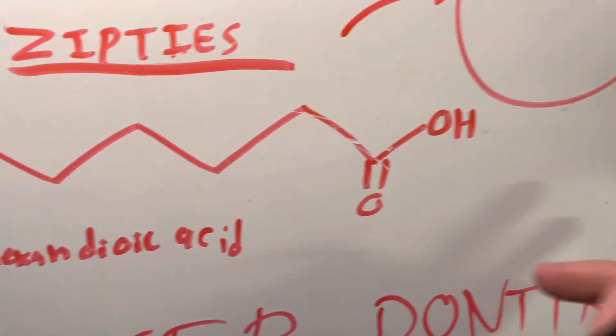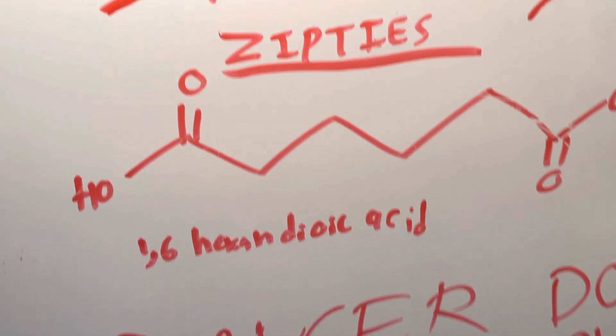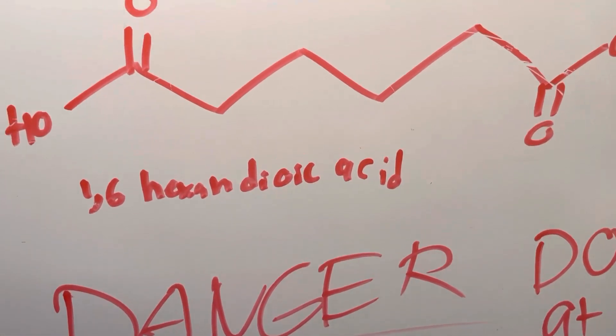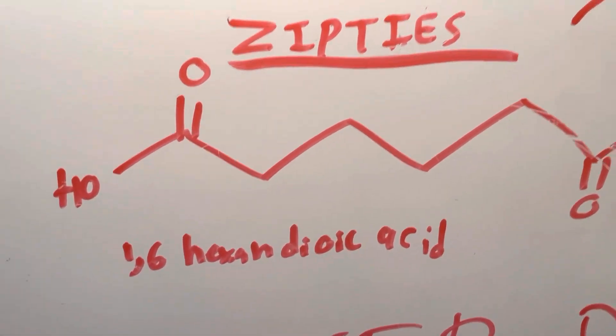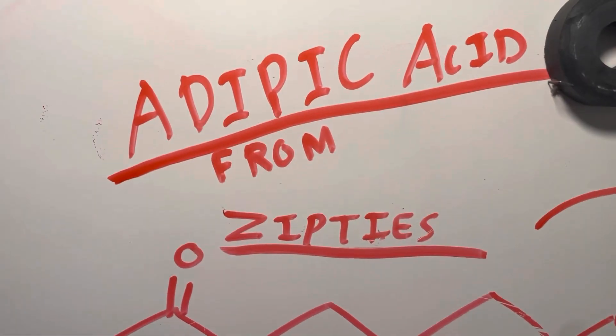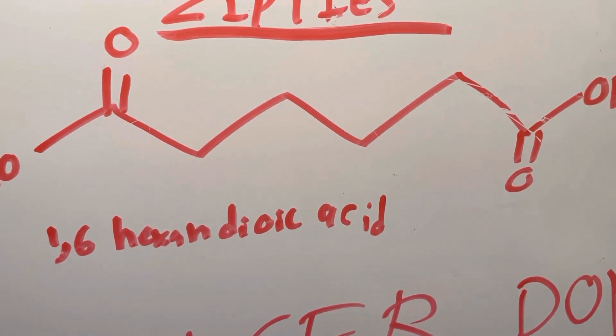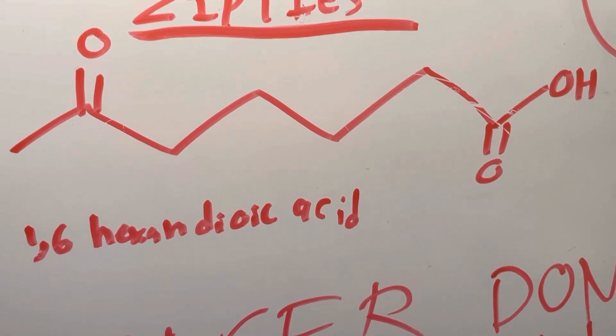Basically, we use acid and water, and where the polymer is, we snap it in half. That's sort of what depolymerization is. We're snapping the chain off, and we're leaving us with our adipic acid.